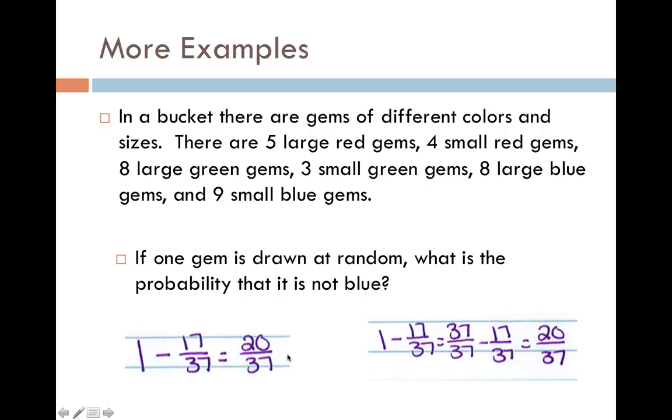Again, to make sure you know how to subtract these, we can either type in our calculator, or 1 minus 17 over 37. I can change the 1 into 37 over 37. Now they have common denominators. I can subtract the numerators. 37 minus 17 gives me 20. Again, or you can just type in your calculator.